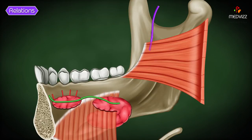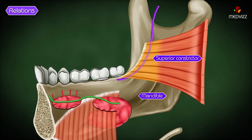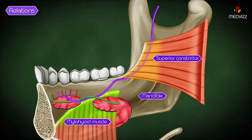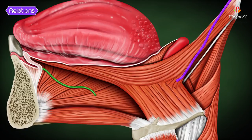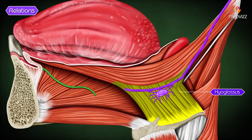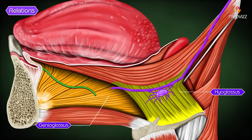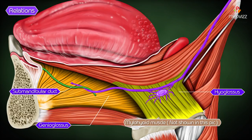Next, the lingual nerve lies in direct contact with the mandible, medial to the third molar tooth, between the origins of the superior constrictor and the mylohyoid muscles. It soon leaves the gum and runs over the hyoglossus, deep to the mylohyoid. Finally, it lies on the surface of the genioglossus, deep to the mylohyoid, where it winds around the submandibular duct and divides into two terminal branches.